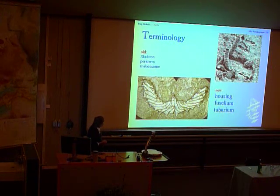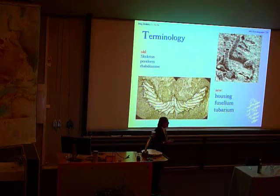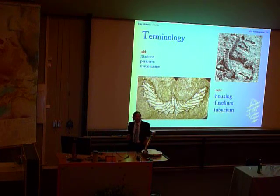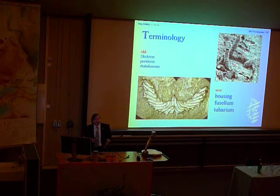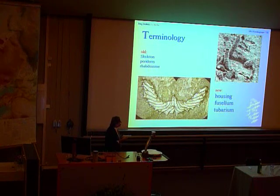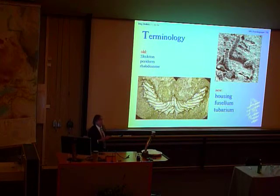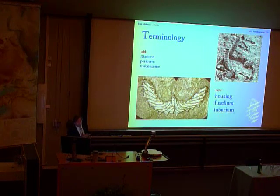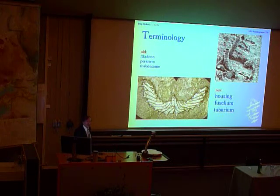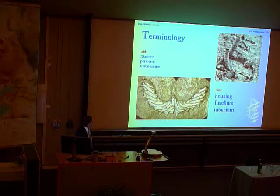And then we have the nice term the rhabdosome for the graptolite colonies in the past, and for the modern pterobranches we had a different term, the coenecium, which is again derived from bryozoan taxonomy. We now decided to use the term tubarium for all these things, which was actually initially suggested for the tubarium of Rhabdopleura in the 1870s by Lankester, who was one of the first to describe these organisms at all. So a little bit of a change in terminology has been necessary to adjust our understanding of the graptolites.